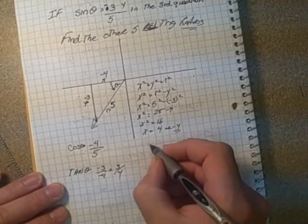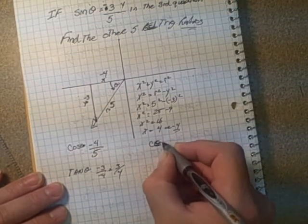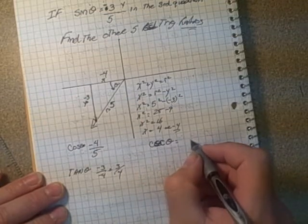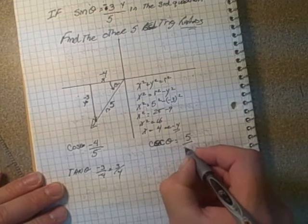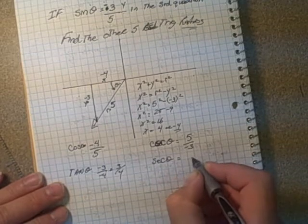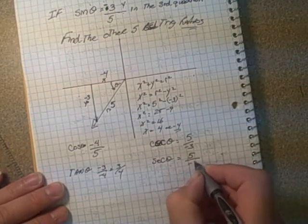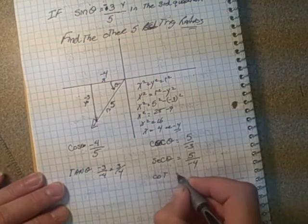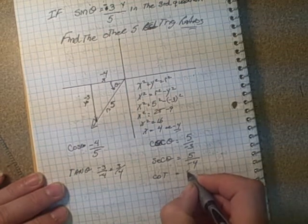And we have cosecant. Cosecant, I was going to put cosine there. Pardon me again. So cosecant is r over y. So r over y. And secant, and that's r over x. And finally, cotangent. And that's going to be x over y. So -4 over -3, or 4 over 3.